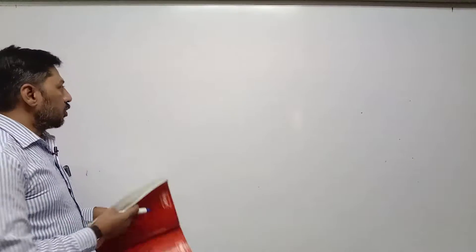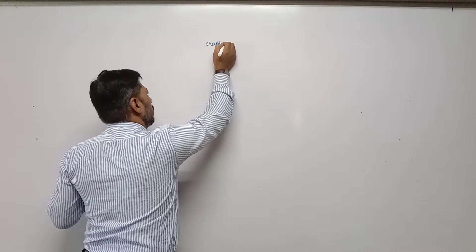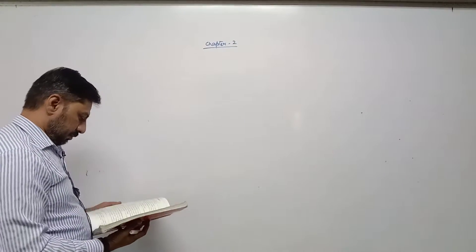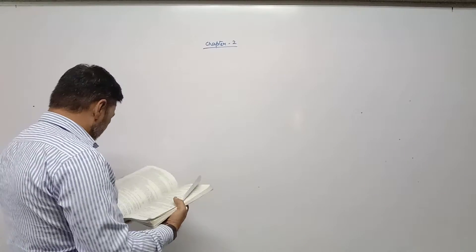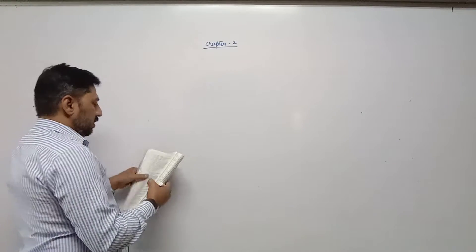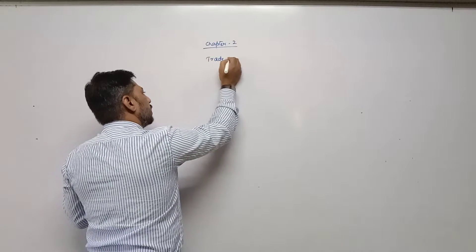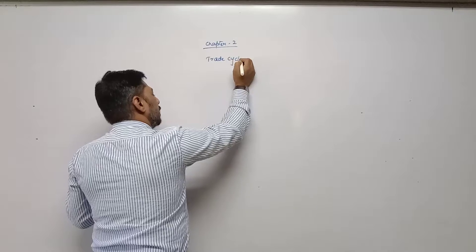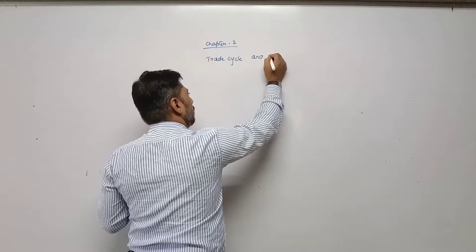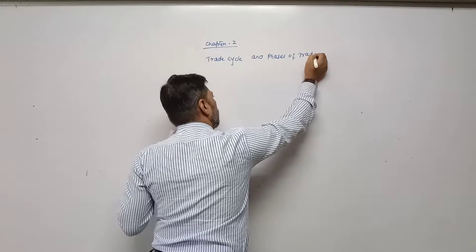Good morning to all of you. In economics today, we are on the last topic of chapter number 2. The last topic is given on page number 16. We have completed factors of production. The next topic is trade cycle and phases of trade cycle.